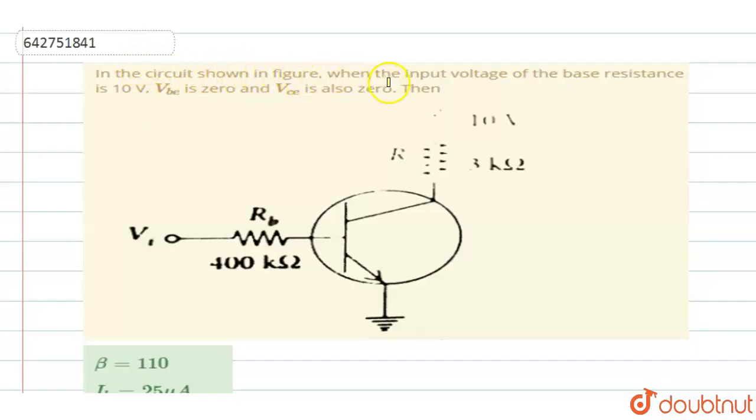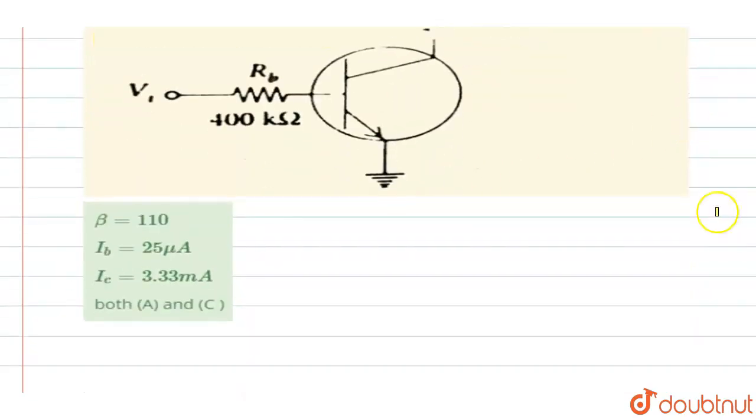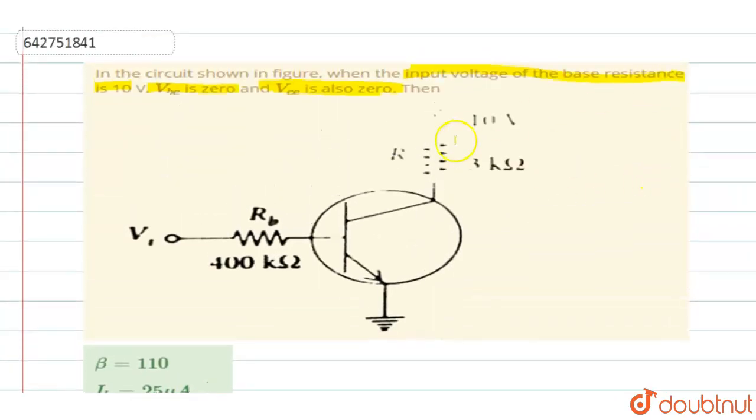In the circuit shown in figure, when the input voltage of the base resistance is 10V, VB is 0, VCE is also 0, then what happens to the values of these? They are giving you four different options. Among this, which one works out true? Now, to see to it, observe the circuit.